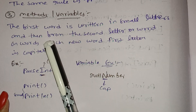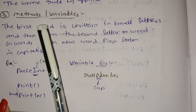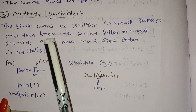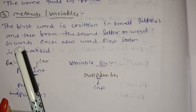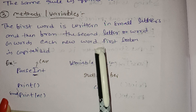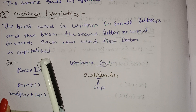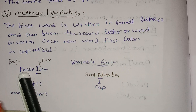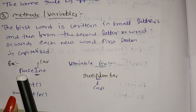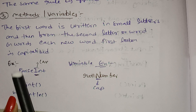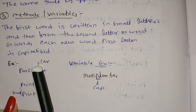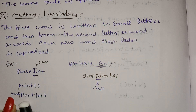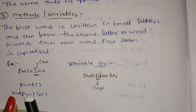Methods and Variables: the first word is written in small letters, and then from the second word onwards, each new word's first letter is capitalized. For example, a method — the first letter is a small letter, the second word starts with a capital letter. For example, print and println use small letters.